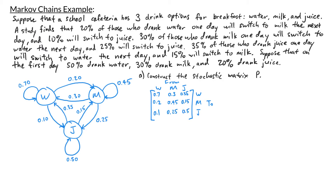So that's our stochastic matrix P — the matrix with entries 0.7, 0.3, 0.35 in the first row; 0.2, 0.45, 0.15 in the second row; and 0.1, 0.25, 0.5 in the third row. You'll notice this is a stochastic matrix because every column has entries that add up to 1, and every entry in the matrix is non-negative.